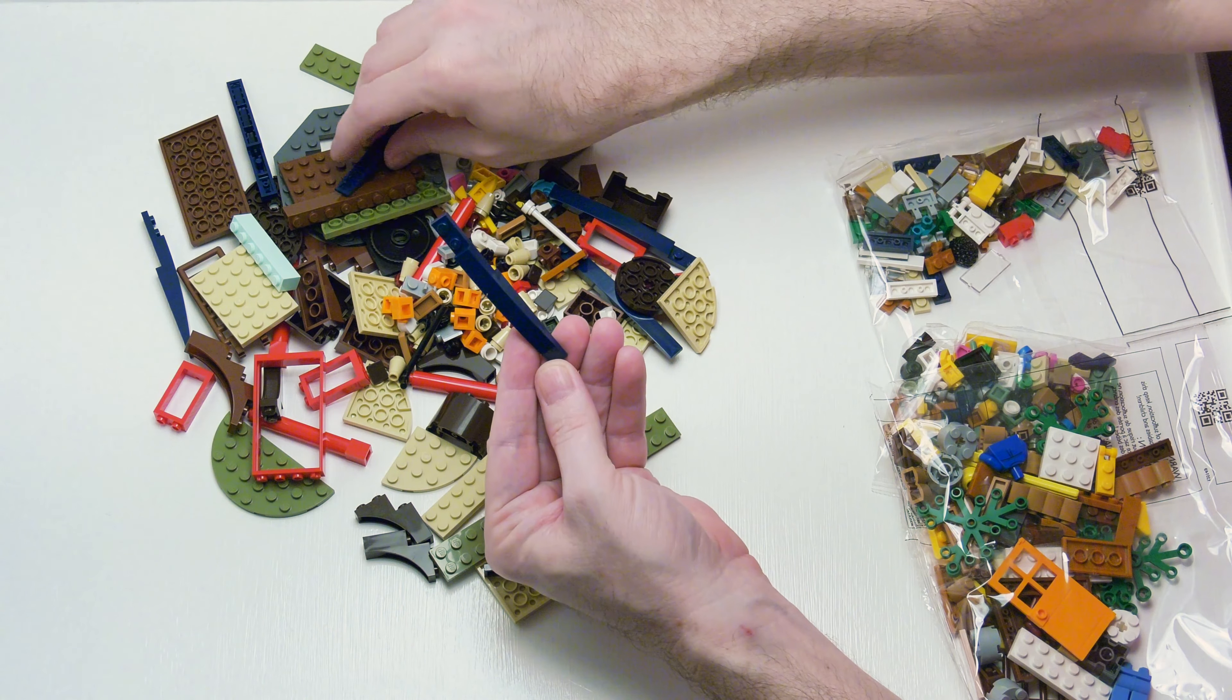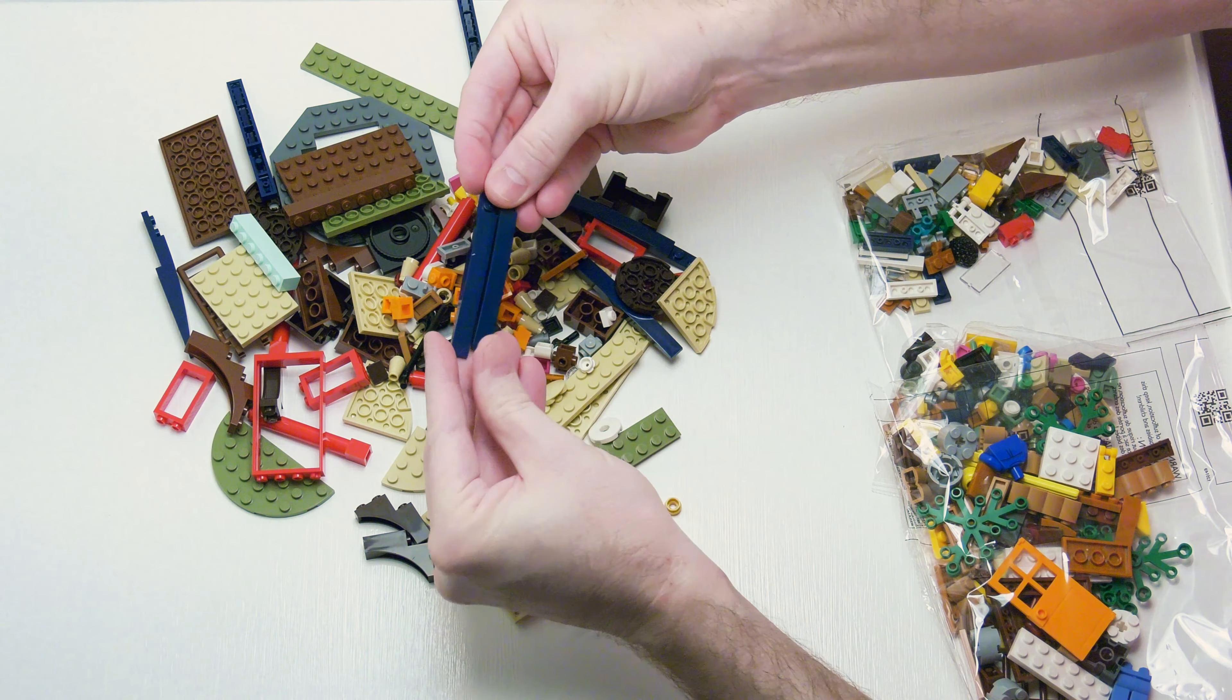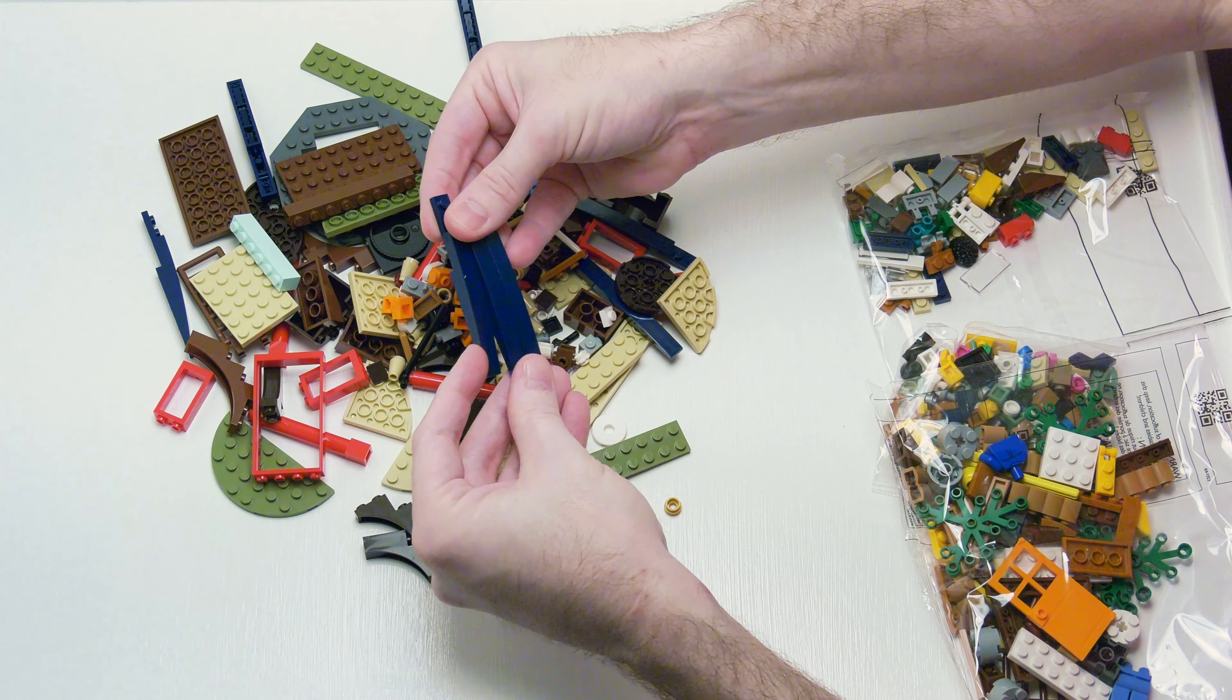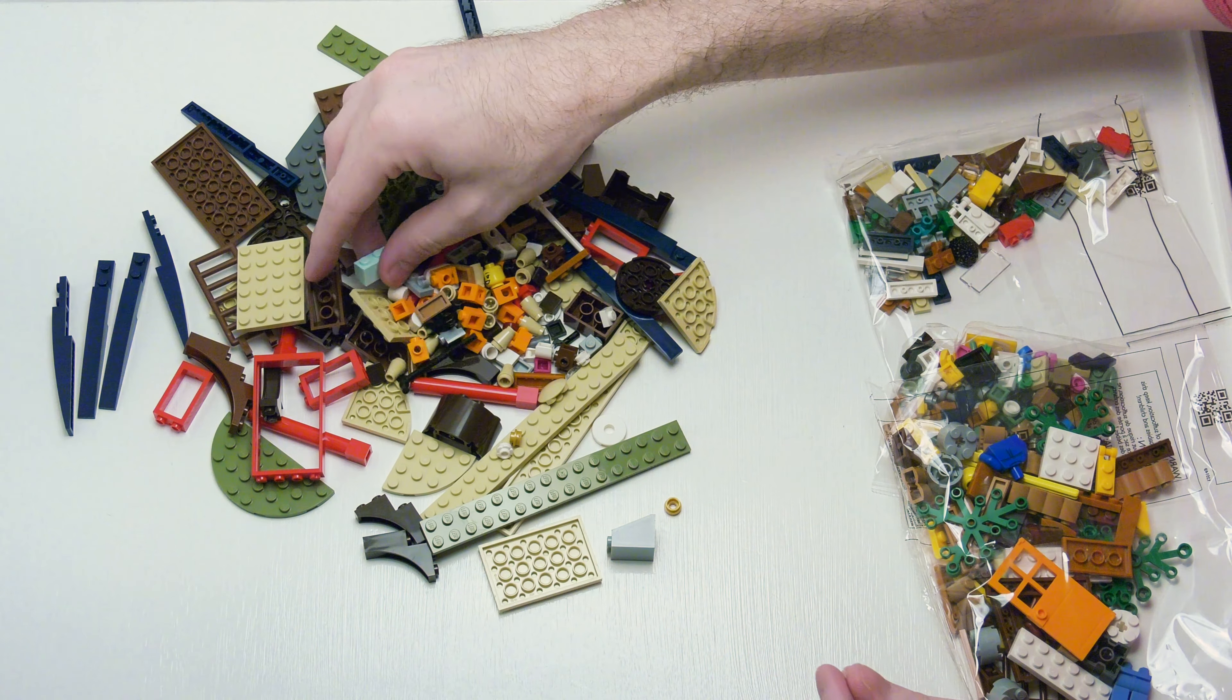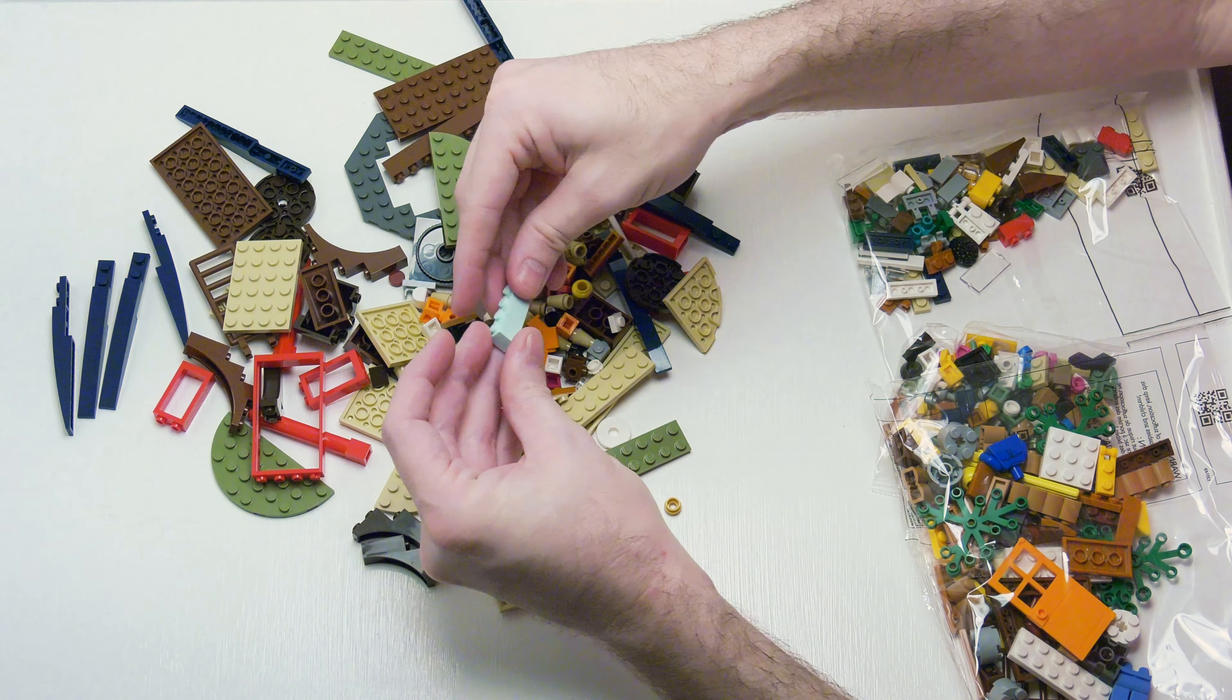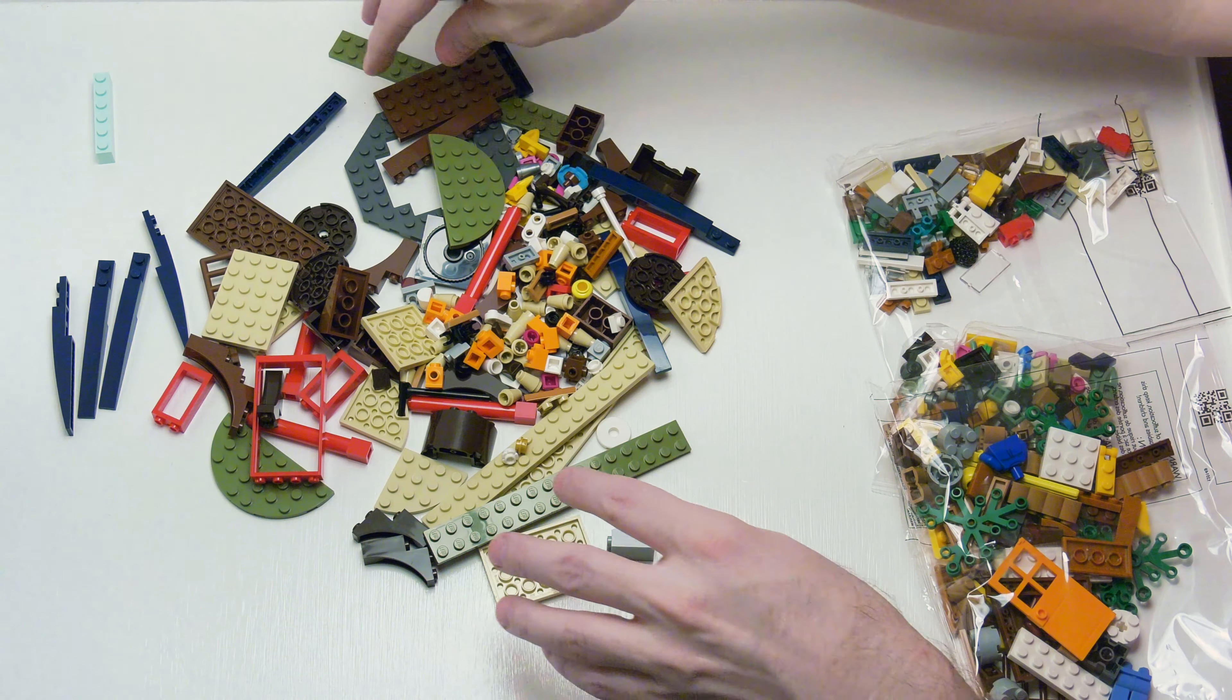So it looks like we obviously get some of these. I believe these are 1 by 10 plates with bow. We get a few of these, pretty good for making like campers or roofs. Oh wow! Is this like light aqua 1 by 6 brick? How many of those do we get in there? Just one? That's not good.